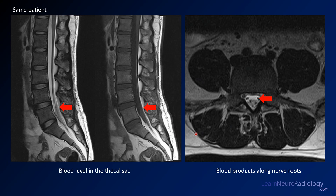Here in the same patient, these are images from a lumbar spine. You see a fluid level in the inferior portion of the thecal sac — that's blood that's come down from the head. Subarachnoid blood is actually layering in the most dependent portion of the CSF in the body, which is in this caudal portion of the thecal sac.